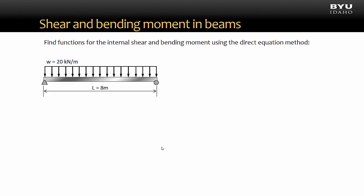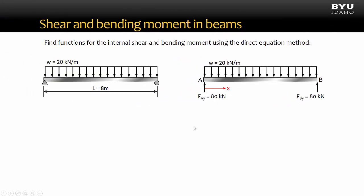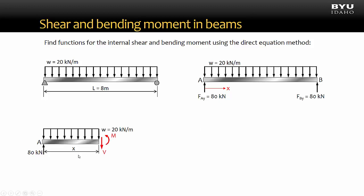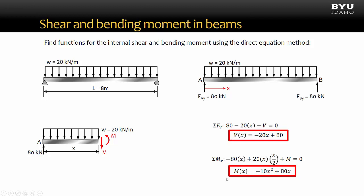Let's do a little review of the direct equation method, then we can compare the answers to the integration method. This example problem states: find functions for the internal shear and bending moment using the direct equation method. We first find the support reactions using statics. Next, we define an x-axis that runs in the direction of the beam. I choose to put the origin of the axis at point A. Then we make a theoretical cut in the beam at a distance x from the origin. We draw on the internal shear and moment arrows using the positive sign convention as previously described. Then we solve for the internal shear by summing forces in the y direction. Our answer comes out as a function of x. We solve for the internal moment by summing moments about the cut end. Again, our answer comes out as a function of x. We note that the shear function is the derivative of the moment function.